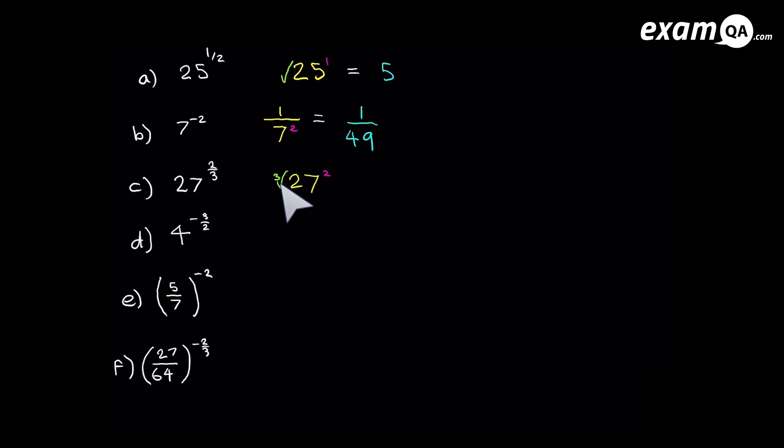So just go ahead and cube root it first. And the cube root of 27 is 3. And if we square that 3 we get 3 squared is 9.